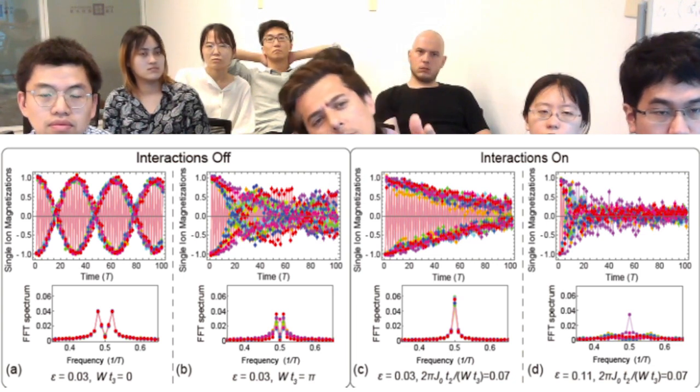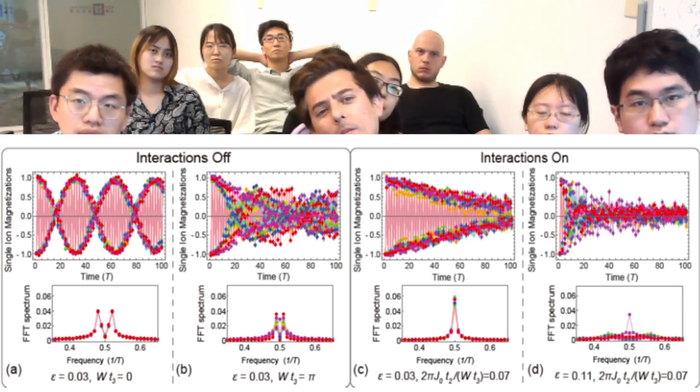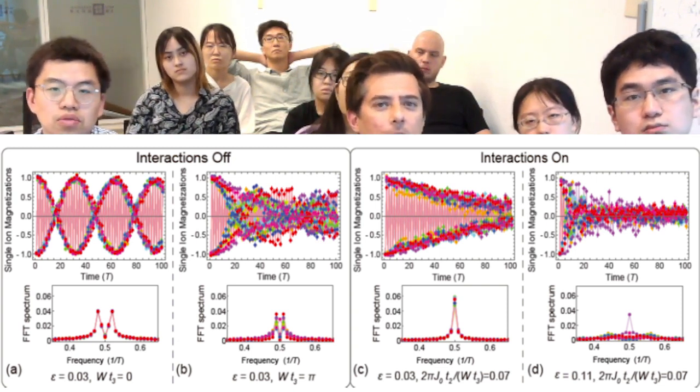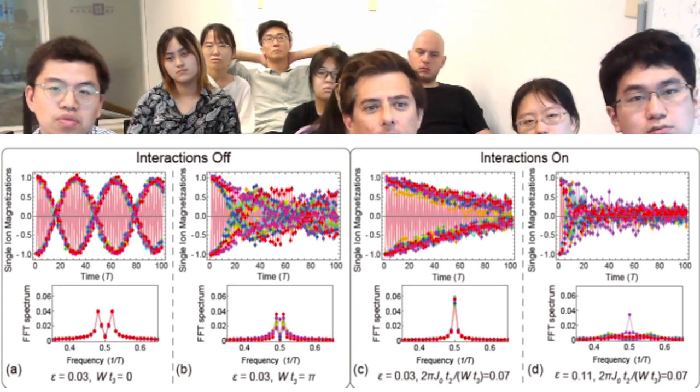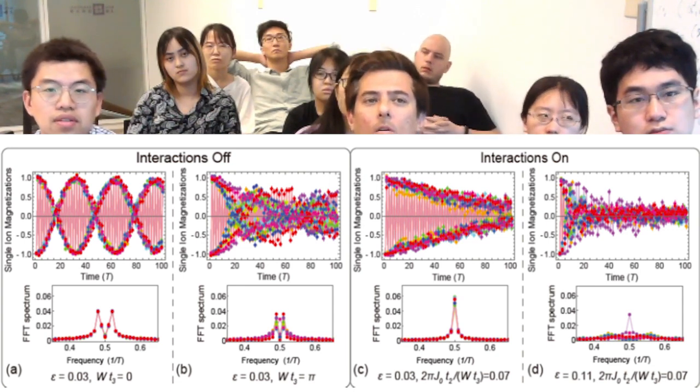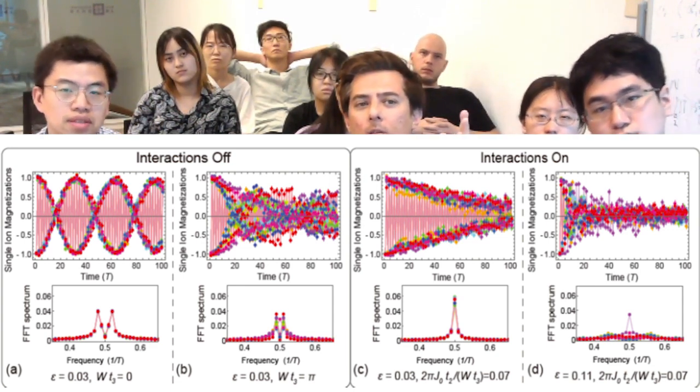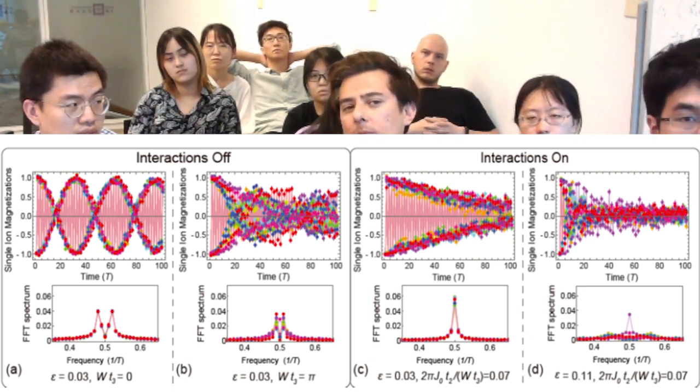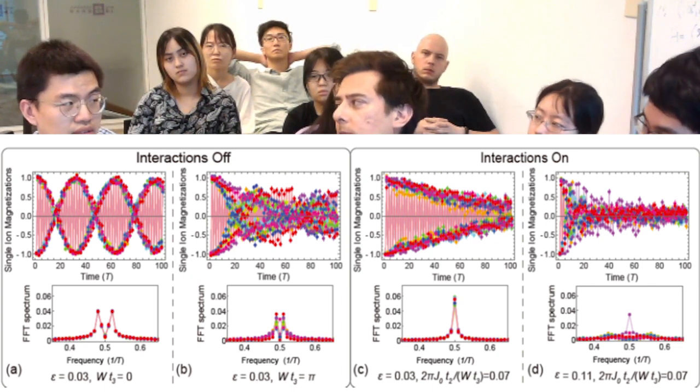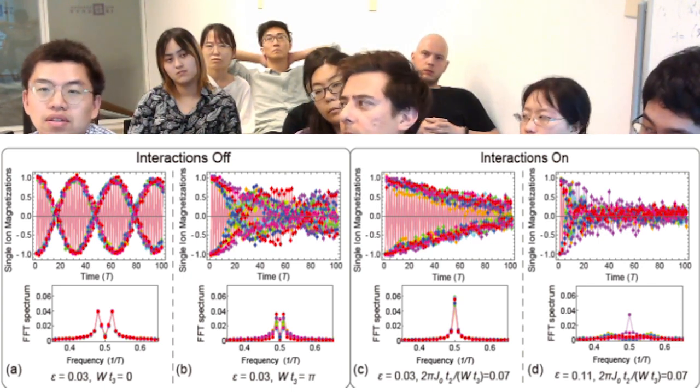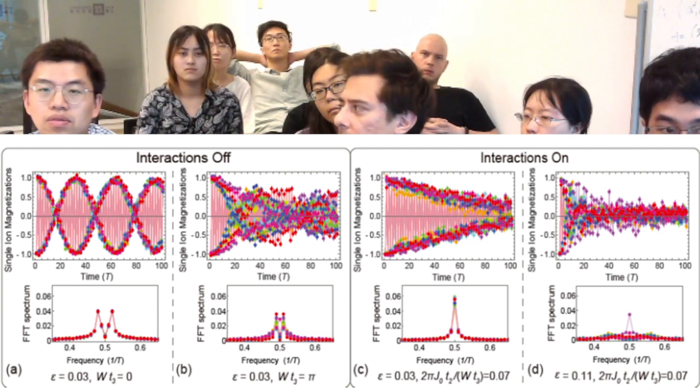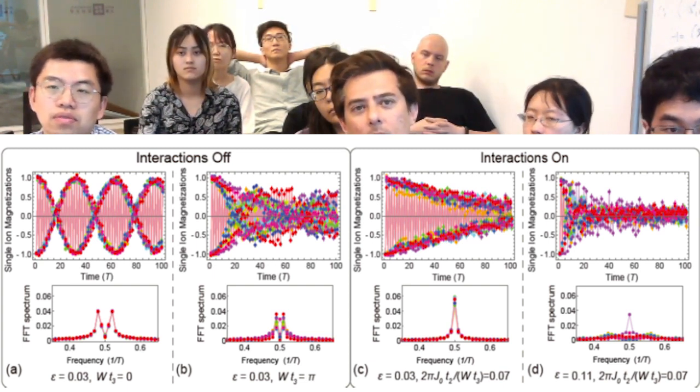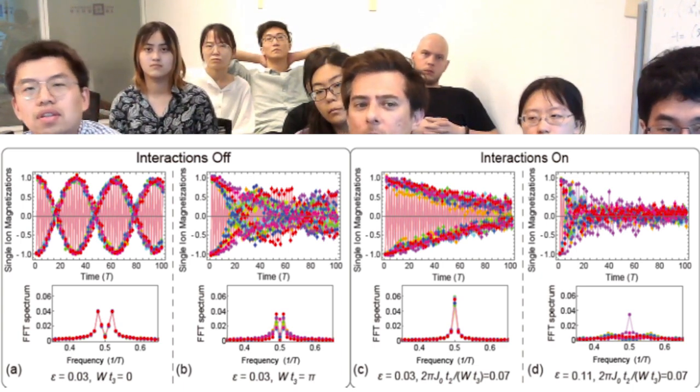When the interactions are off, there's actually two peaks, and they're both around 0.5. At exactly 0.5, there's no peak. So even if it's close to 0.5, it's not a time crystal. It's not a time crystal if it's not exactly twice. You have to be 0.5, or maybe it's transient behavior.